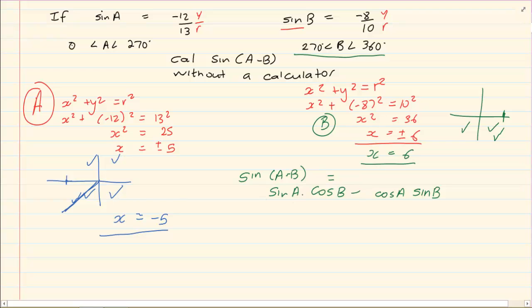Now when we are getting the values for A then we need to look at the answers we have got for A. We have to use the x, y's and r's from A. So sin is y over r. So we have got minus 12 over 13.